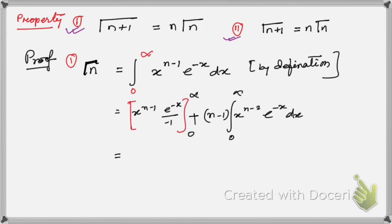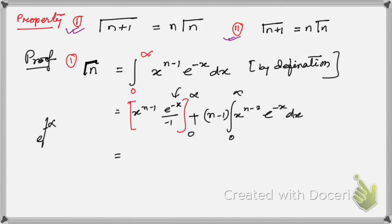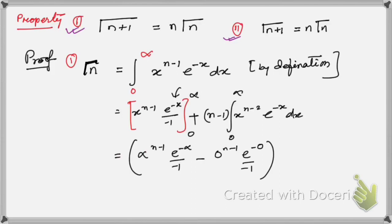If you put x = ∞, then e^(−∞) = 0 and 0 times anything is 0. And if you put x = 0, then x^(n−1) = 0, so 0 times anything is 0. So putting the upper and lower limits, the first part gives 0 minus 0, which is simply 0.